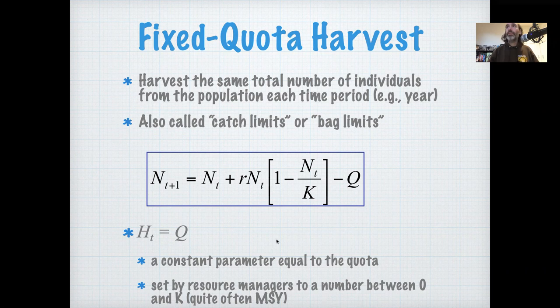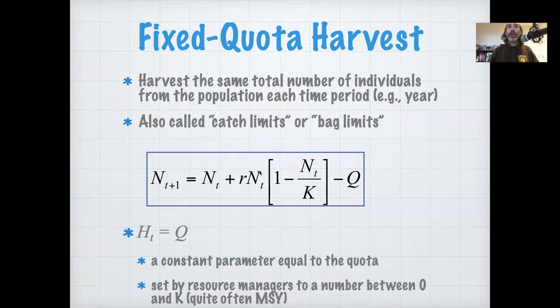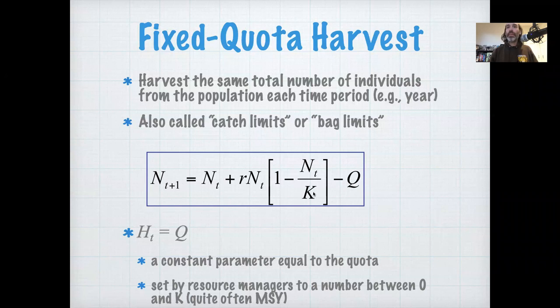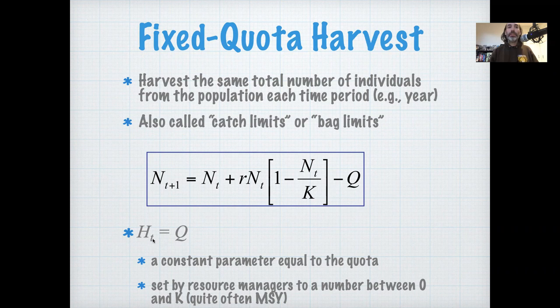If you remember in the previous version of this, there was our discrete logistic growth curve, which says the population in the future is the population right now, plus some growth that's affected by the growth rate and the carrying capacity, minus some harvest that was time-dependent, h sub t.